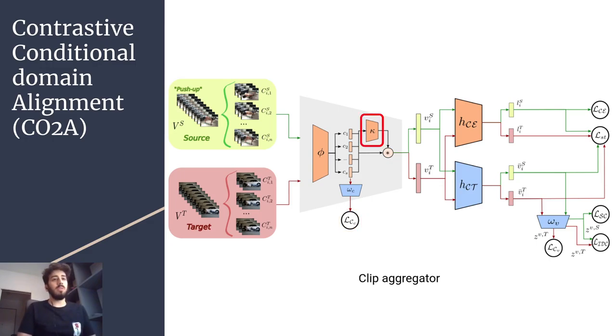Moving on, we use a network Kappa that produces weights for the clip level features, which are then aggregated to produce video level features. We give those features to the first branch of our network, which consists of a classification head that produces logits, and then we apply a cross-entropy loss on the source data to learn a classifier.